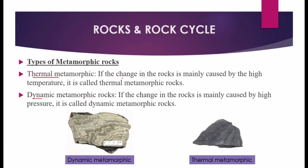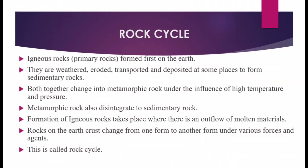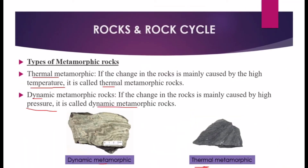Metamorphic rocks are of two types: thermal metamorphic and dynamic metamorphic. If the change in rock is mainly caused by high temperature, it is called thermal metamorphic rock. An example is basalt changing into slate through thermal metamorphism. Granite changing into gneiss is caused by dynamic metamorphic processes.